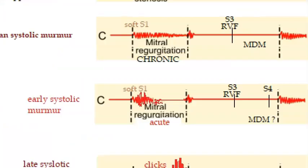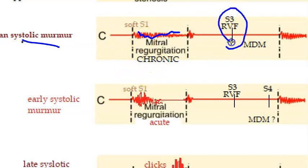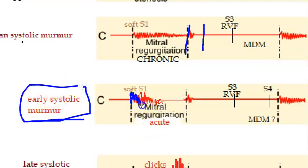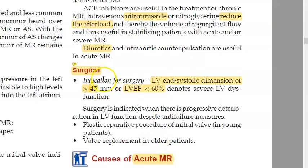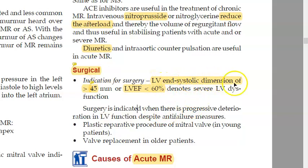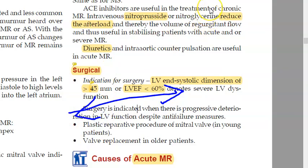In summary: in chronic MR you will see pan-systolic murmur, soft S1, S3 due to rapid ventricular filling, and in severe cases a mid-diastolic murmur. There will be wide S2 in mitral regurgitation. In acute MR, you will have early systolic murmur and S4. Criteria for intervention include left ventricular end-systolic dimension greater than 40–45 mm or left ventricular ejection fraction less than 60 percent.